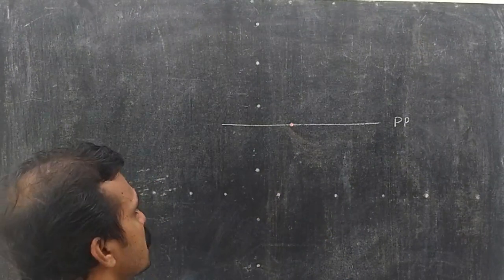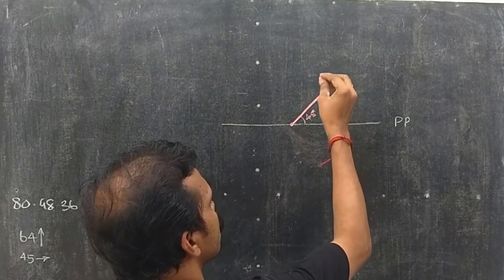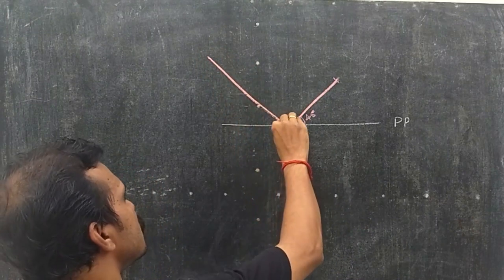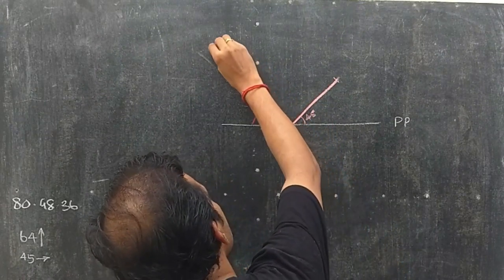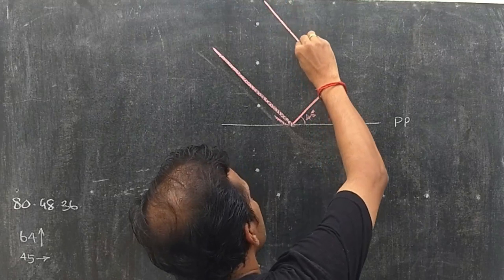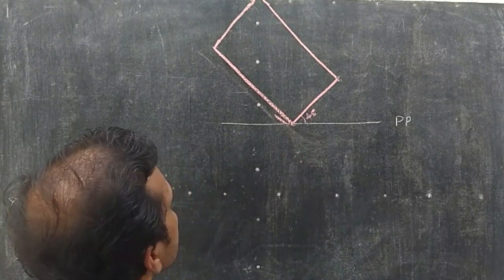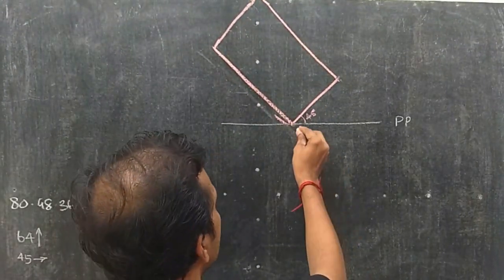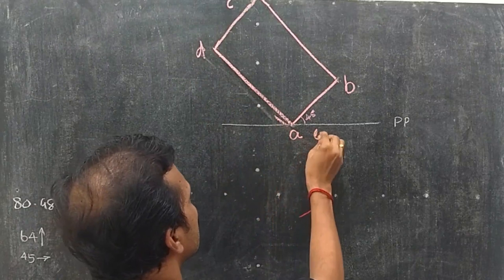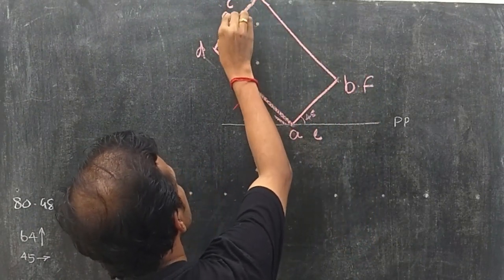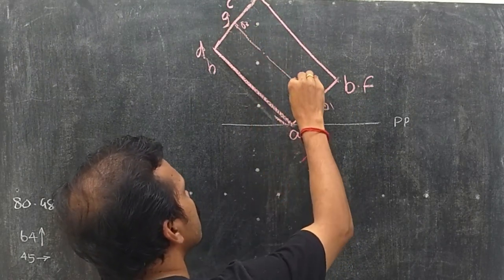If this is the point touching the picture plane, from that point at an inclination of 45 degrees, this is 48 and this is 80. This is the top view. You can name the points A, B, C, D, E, F, G, H, with O1, O2, and this is the axis.